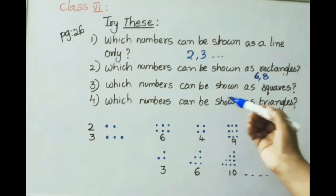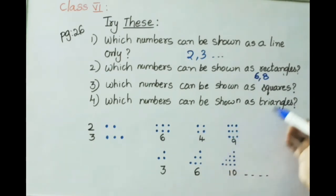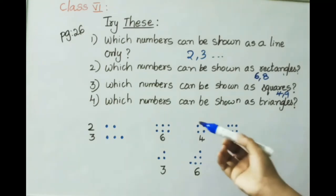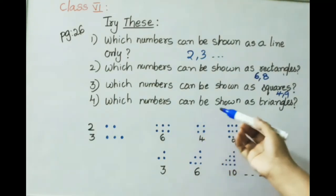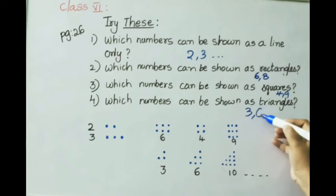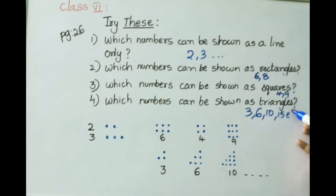Which numbers can be shown as squares? Answer: 4, 9, etc. Which numbers can be shown as triangles? Answer: 3, 6, 10, 15, etc.